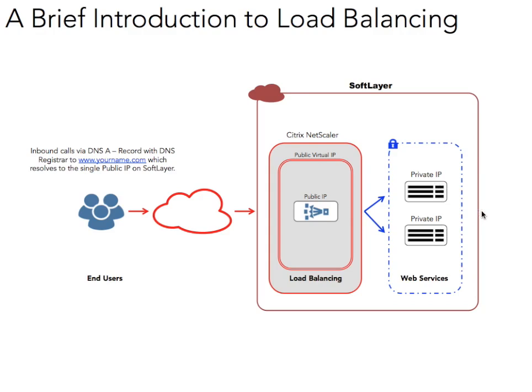Another way of doing load balancing is least connection. Least connection applies when you have, for example, an eShop where people log in and maintain a basket of goods. You want their connection — their session — to exist on the same web server, otherwise the basket will get corrupted and they won't know where they are. So people log in and stick with one server. The least connection method routes new users to the machine with fewer active connections.